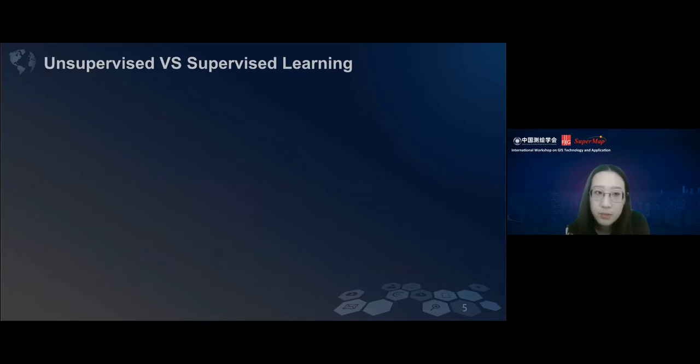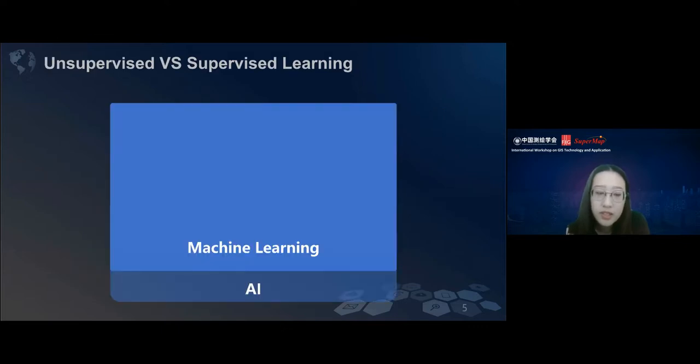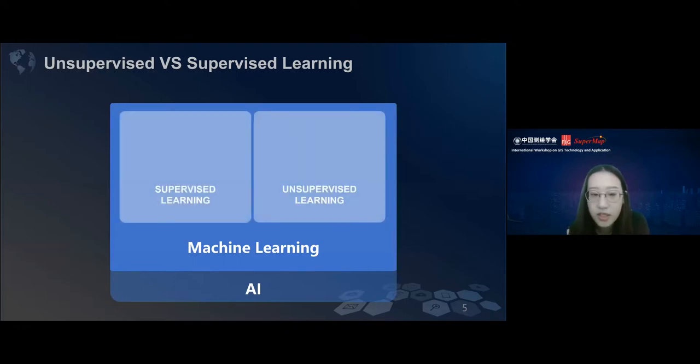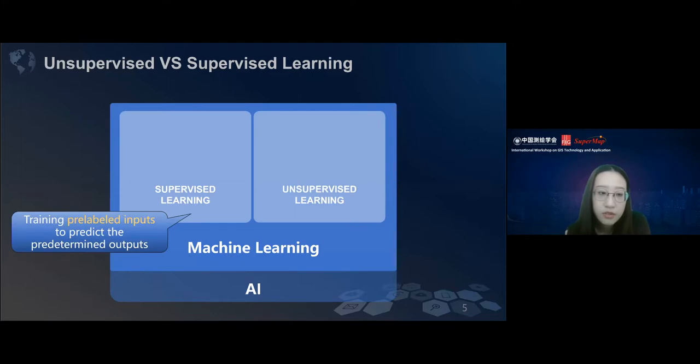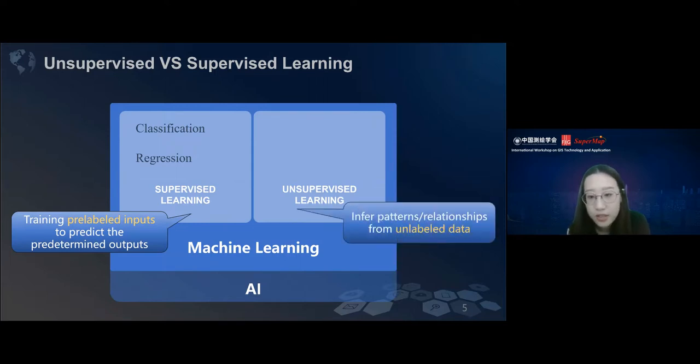Machine learning can be classified into supervised learning and unsupervised learning. Supervised learning can be training pre-labeled input to predict predetermined output and needs the label first. Classification and regression are two traditional supervised learning tasks, and of course deep learning goes across this too.